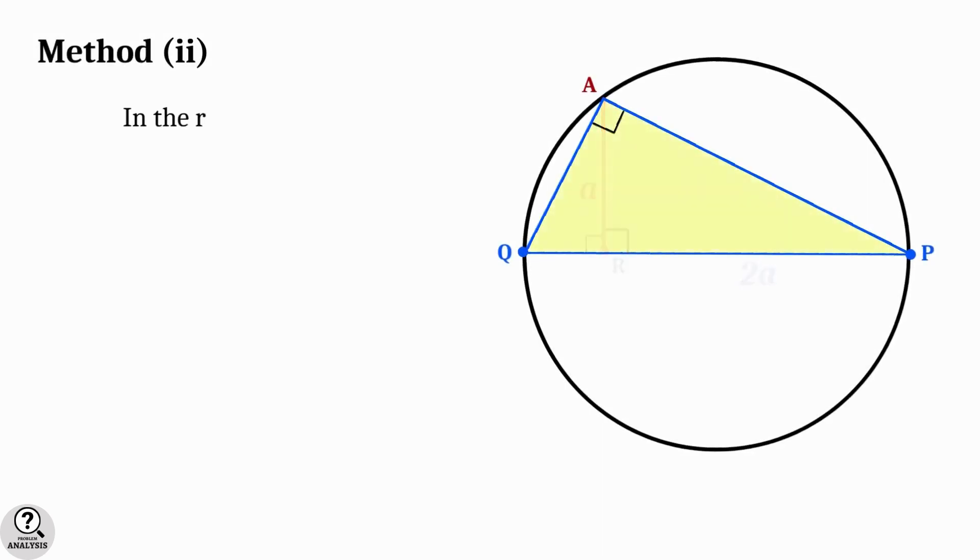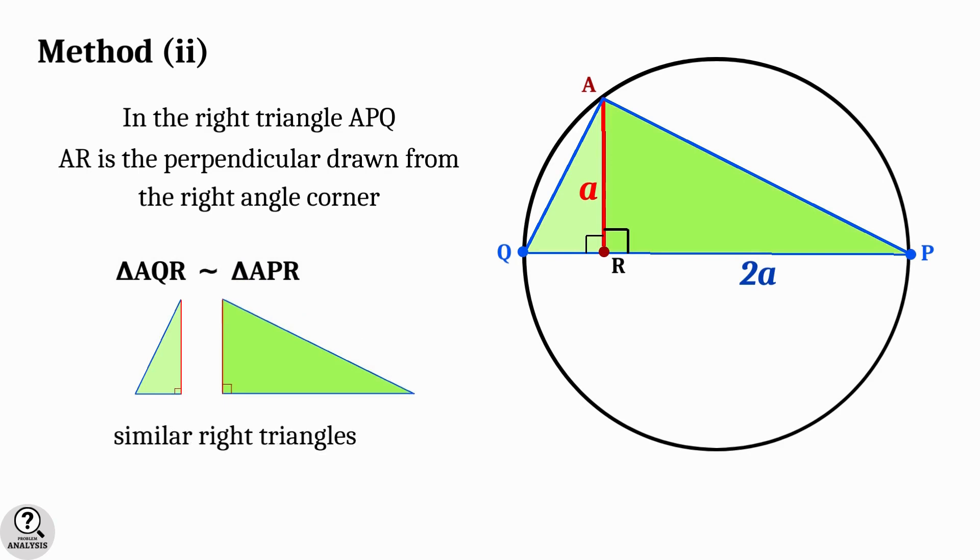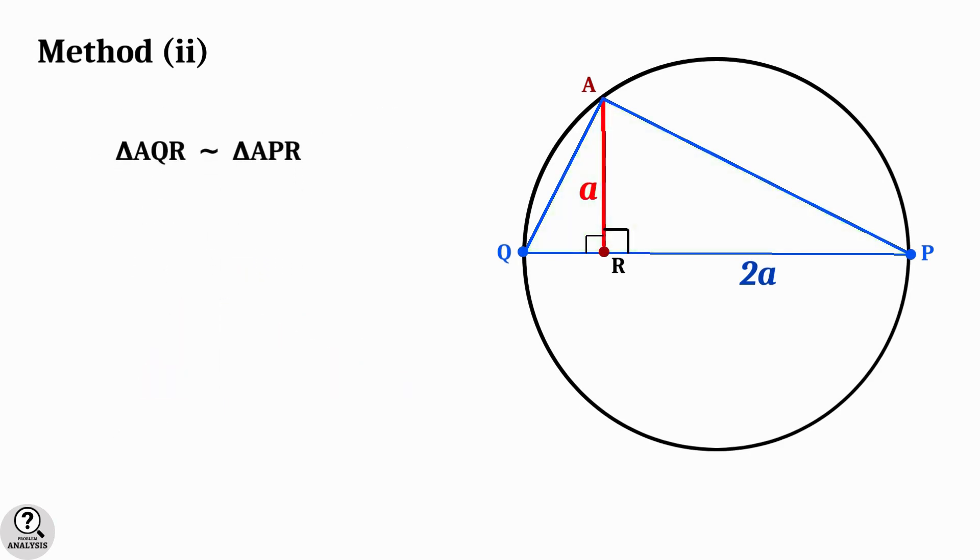Now coming back to the figure, in the right triangle APQ, AR is the perpendicular drawn from the right angle corner. Therefore, triangle AQR and triangle APR are similar right triangles. And hence, by the property of similar triangles, the ratios of similar sides are equal.